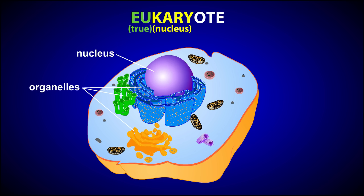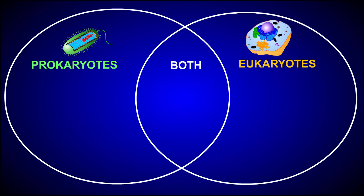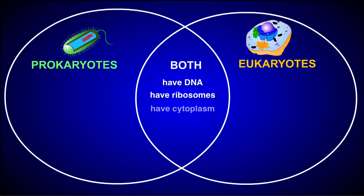Eukaryotic cells are larger and much more complicated than prokaryotic cells. However, they do share a few things in common with prokaryotes. Let's take a look at a Venn diagram to compare prokaryotes to eukaryotes and to also see what areas they have in common. Both prokaryotes and eukaryotes have DNA as their genetic material, have ribosomes, have cytoplasm, and have a plasma membrane.